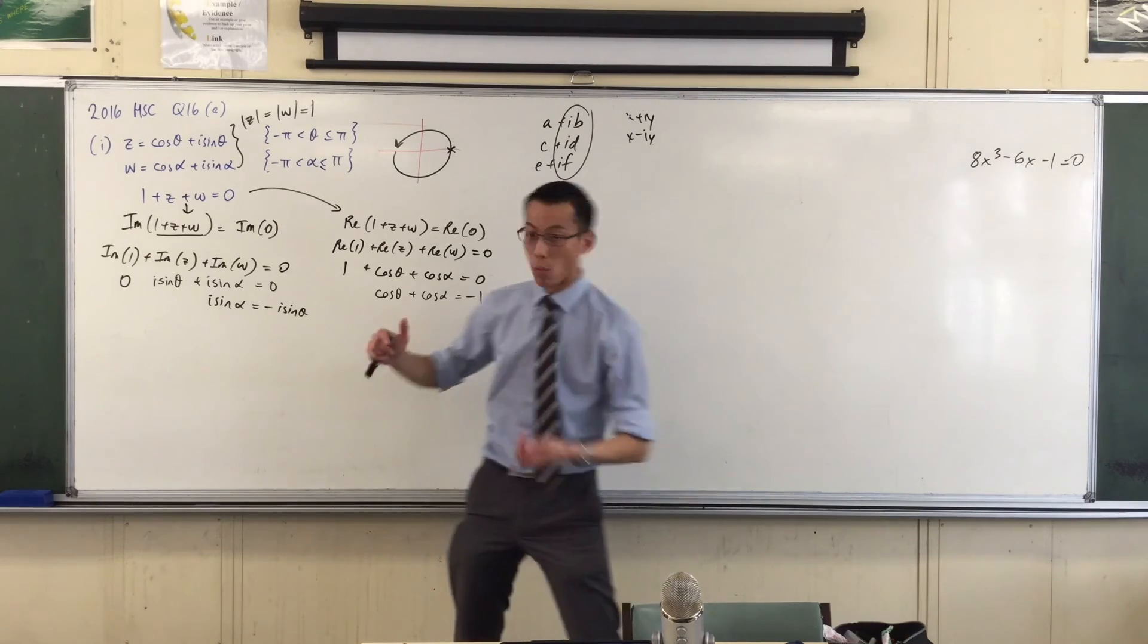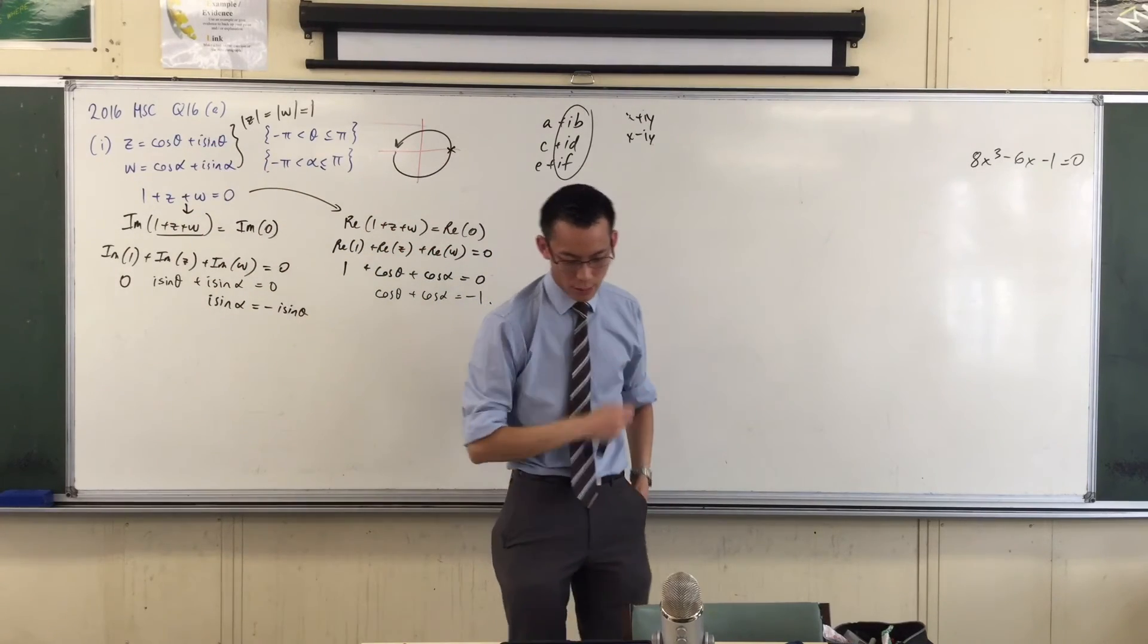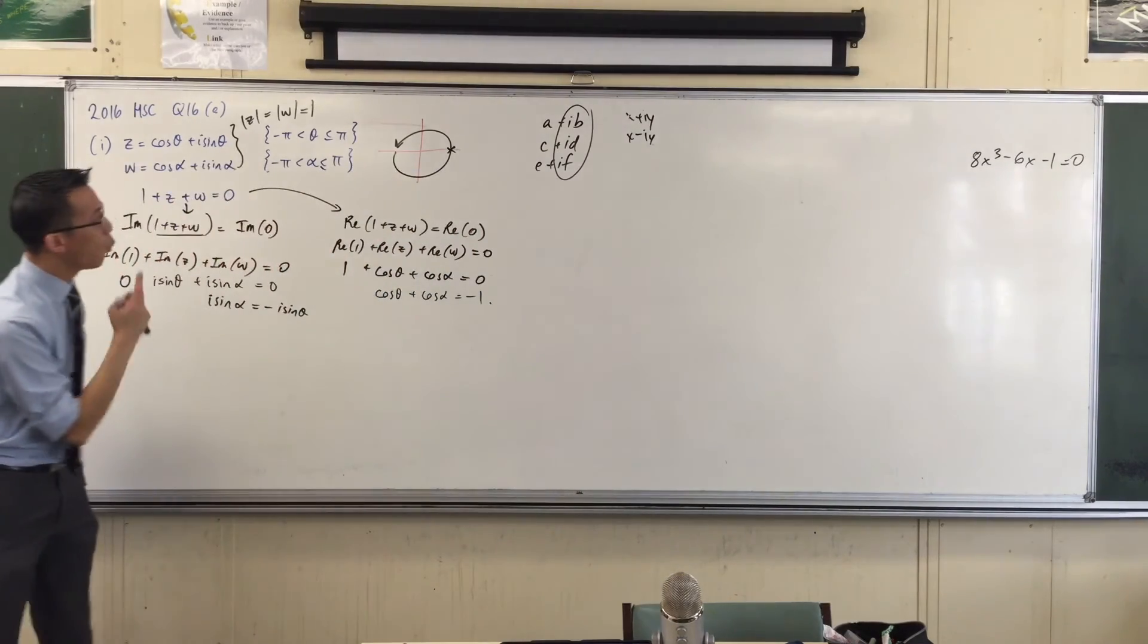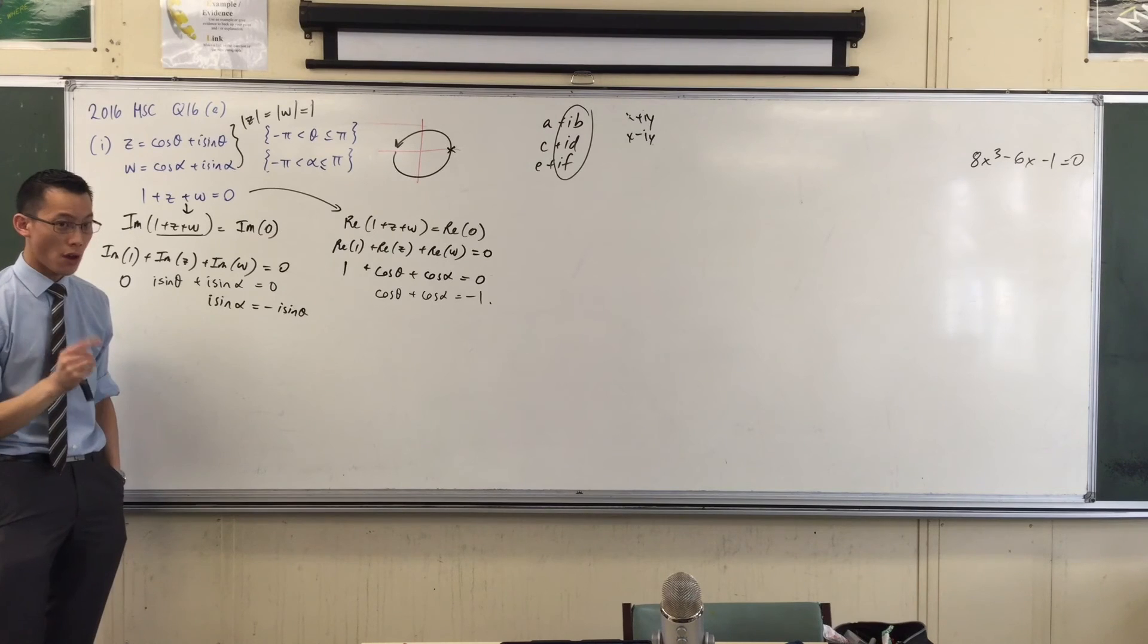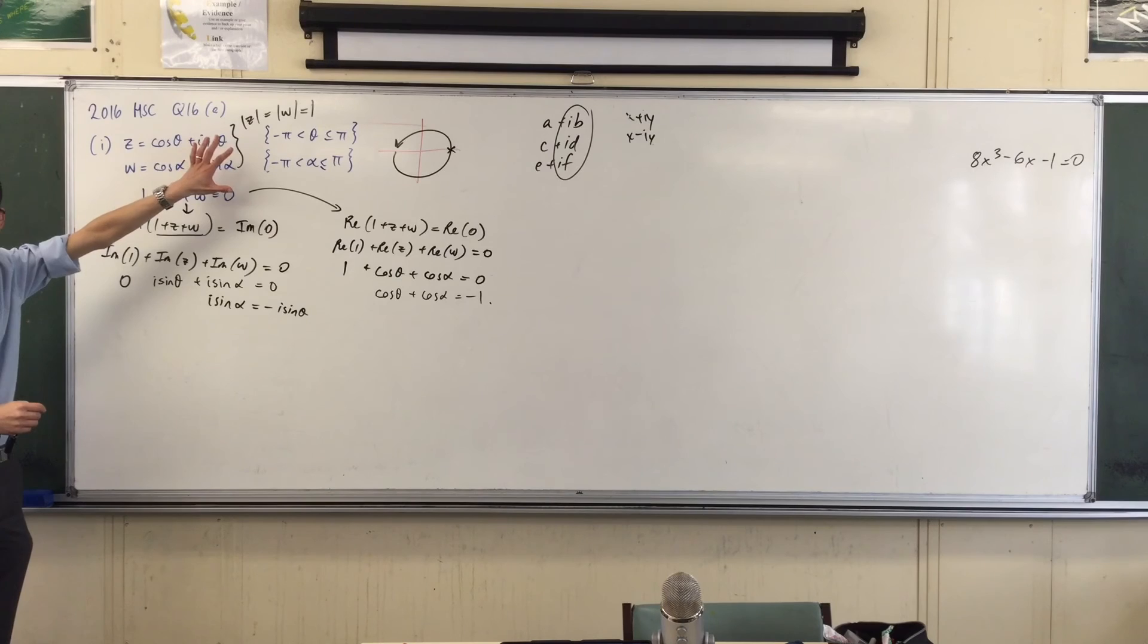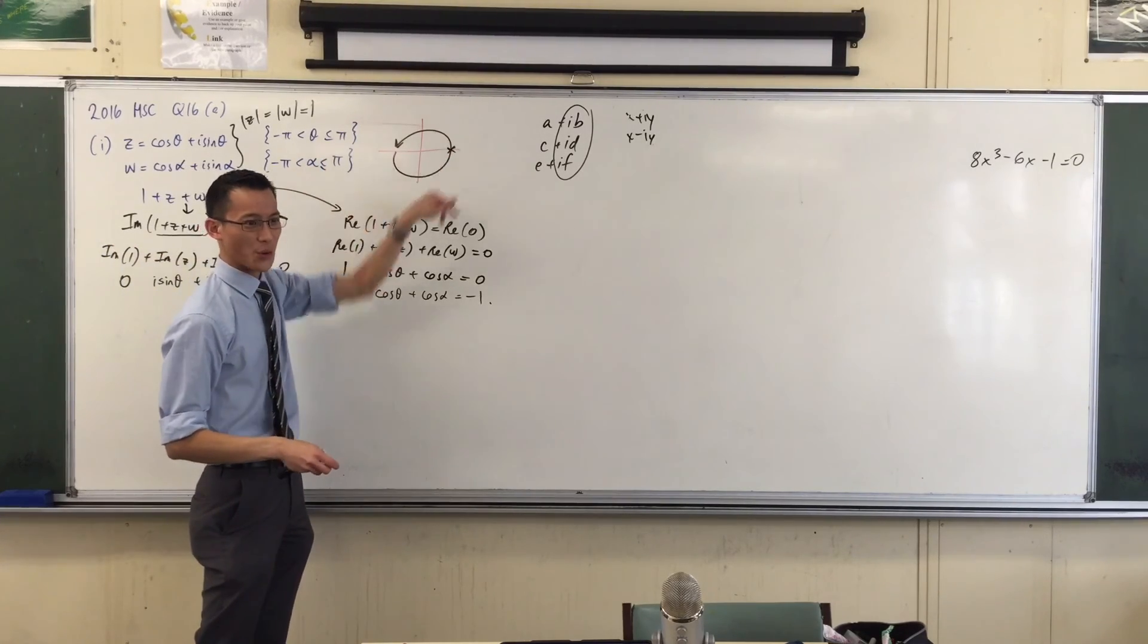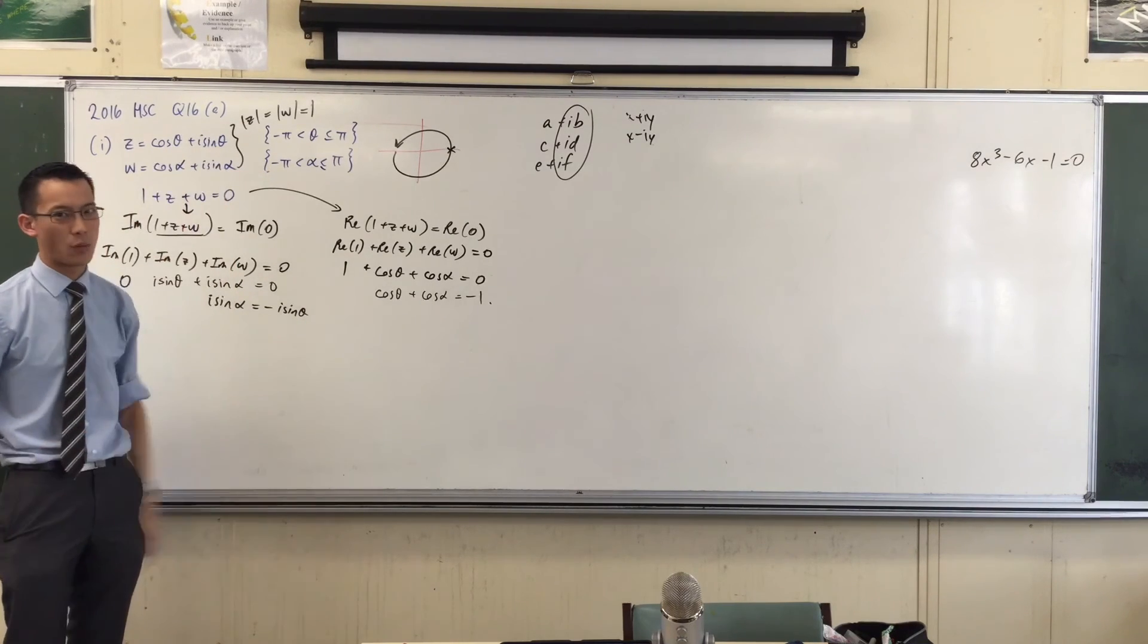I want to show that one, Z, and W form an equilateral triangle in the Argand diagram. Where could Z and W be? Where could they possibly be? Z and W are not just anywhere. In terms of modulus, they are all on the unit circle—they're all on the circumference of the unit circle. Which means I actually know exactly where Z and W have to be.